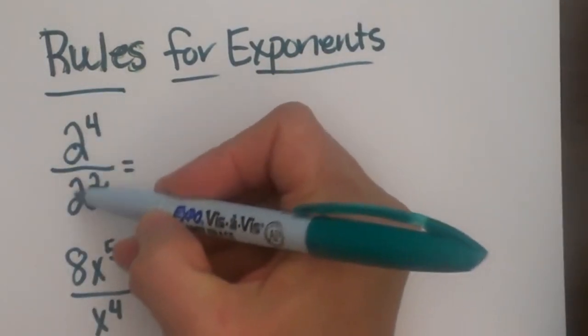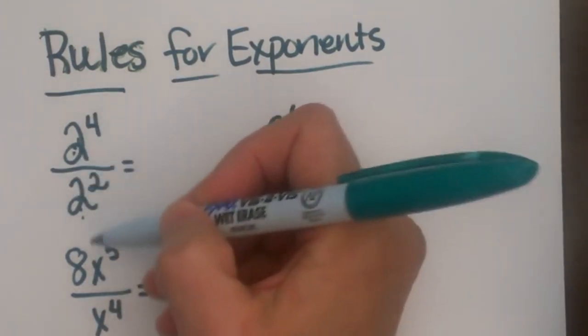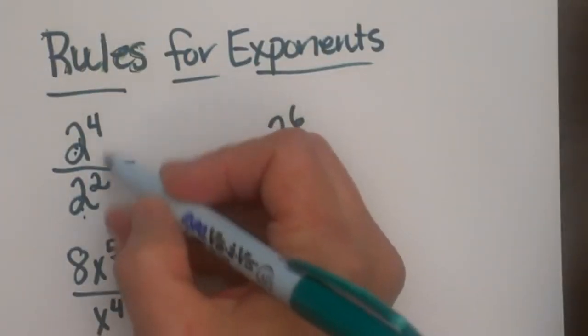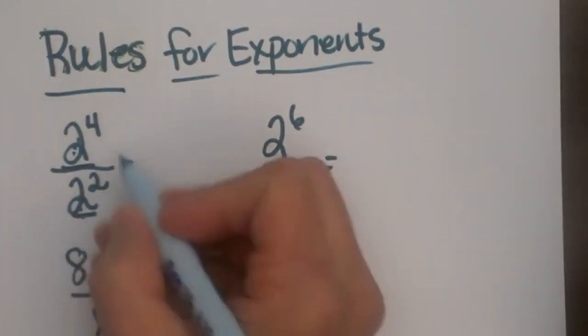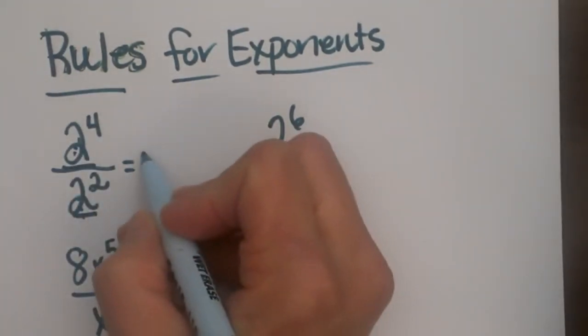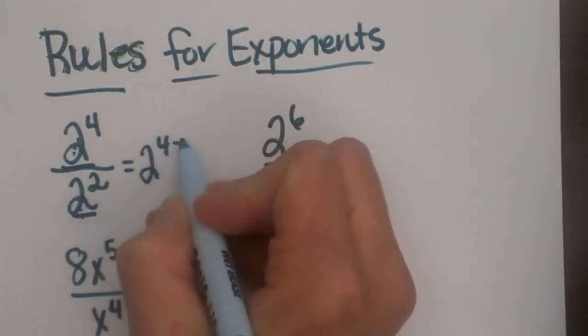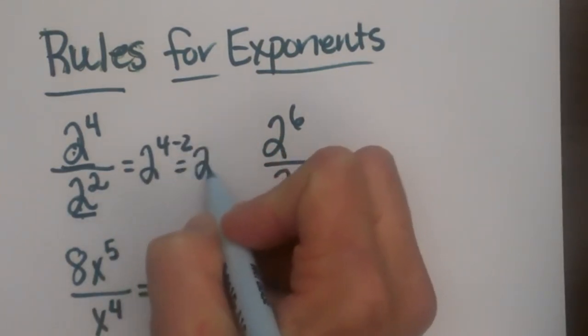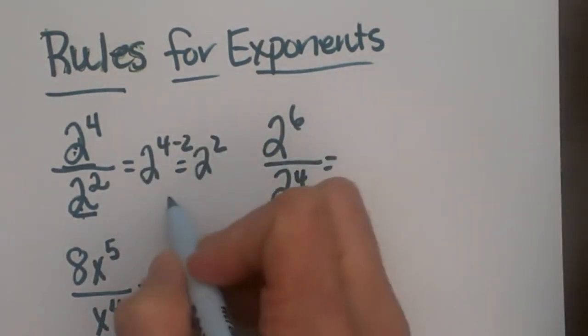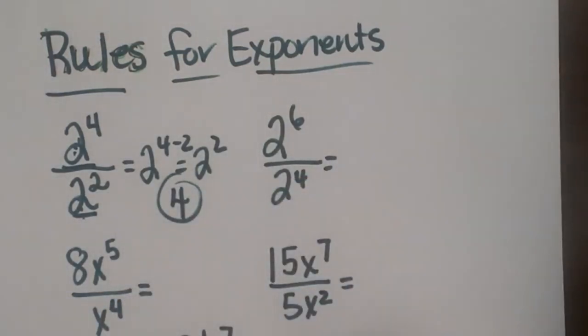Well, since we have like bases and both of these are integers, we just subtract our exponents. So you're really just looking for like bases. With like bases we just take 2 to the 4 minus 2, which is 2 squared, and that actually simplifies to 4 if you need an integer answer.